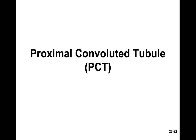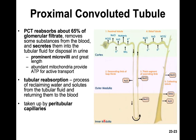The proximal convoluted tubule is the first true section of the nephron tubule. This is the section where we have a lot of microvilli, and the point of them is to increase the surface area. Once you filter out of the glomerulus, that filtrate is going to turn into tubular fluid — the name is simply changing — and it enters this region called the PCT.